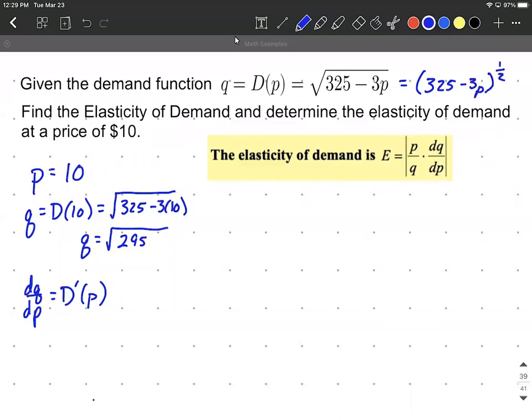What that's going to allow us to do is use the chain rule with the power rule. So this derivative is going to be bring the exponent down - one half comes down in front. You keep what's on the inside the same, 325 minus 3P. We reduce the exponent by one, so one half minus one is negative one half. And then we still have to use the chain rule and multiply by the derivative of what's inside. So the derivative of 325, a constant, is going to be zero. The derivative of minus 3P is going to be negative three.